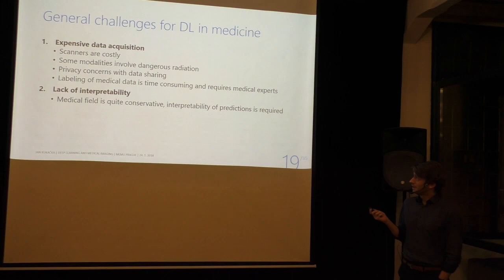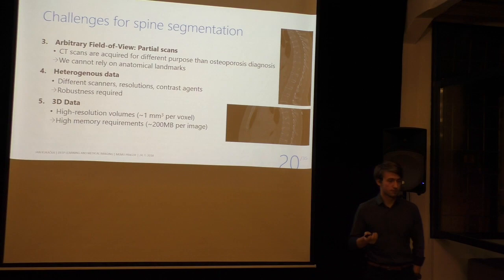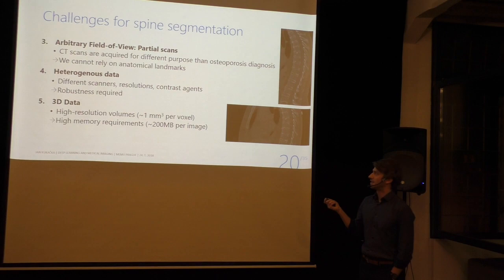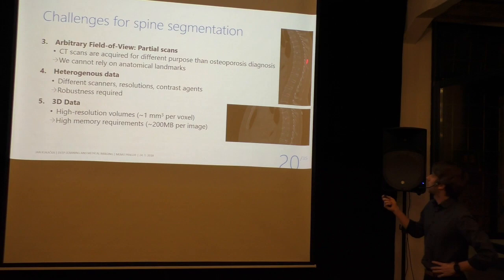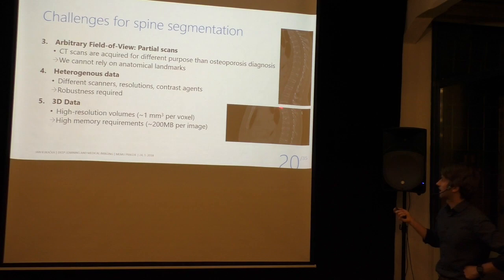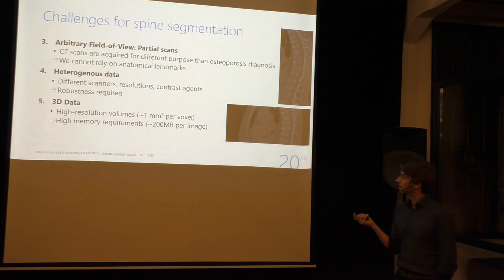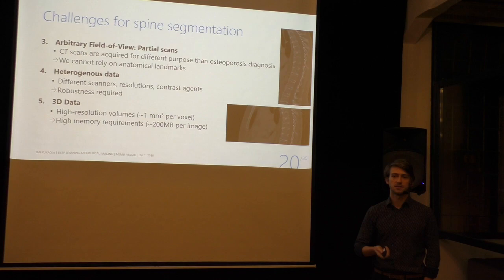There are also challenges specific to our spine segmentation problem. We're working on opportunistic scans — scans not taken for the special purpose of analyzing the spine but for some completely different reason. They have different fields of view: you can have a scan where you can't see the ribs, or one where you only see five or six vertebrae. So the method cannot rely on any anatomical landmarks. The data are quite heterogeneous: they come from different scanners, have different resolutions, and contrast agents may have been applied, so even the appearance of things in the image can vary. We need to be robust to all of that.